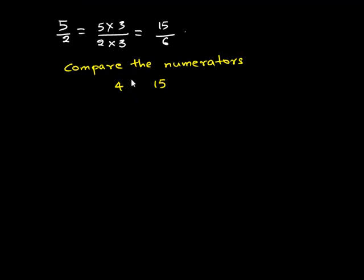So clearly we can say that 4 is less than 15 or we can also write it as 15 is greater than 4. This implies 15 upon 6 is greater than 4 upon 6.